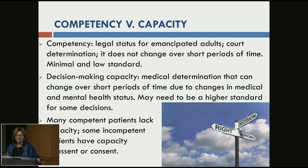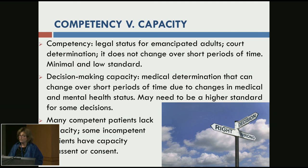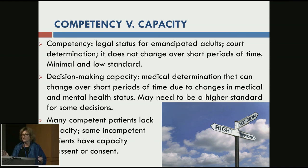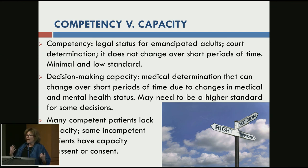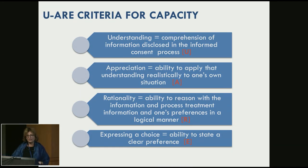The main point is that many competent patients lack capacity, and some incompetent patients actually have the capacity to assent or consent. Think about a 16-year-old teenager or a mildly intellectually impaired adult with a court-appointed guardian who could certainly tell you about preferences. In determining capacity, we use what's known as the UARE criteria: understanding, appreciation, rationality, and evidence of a choice or expression of a choice.